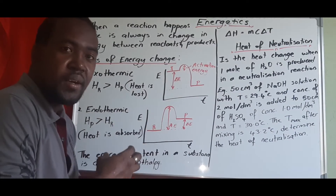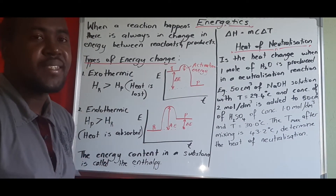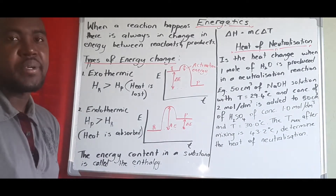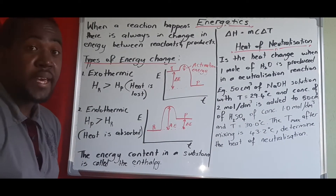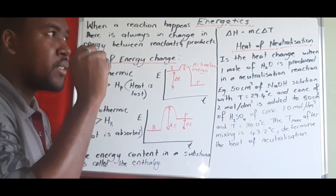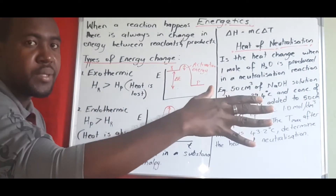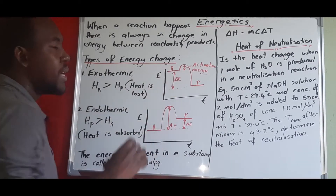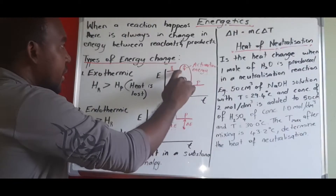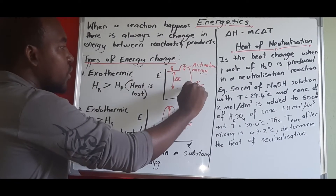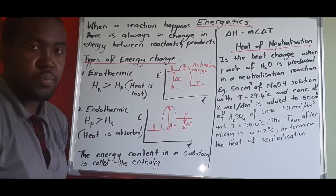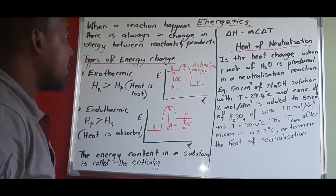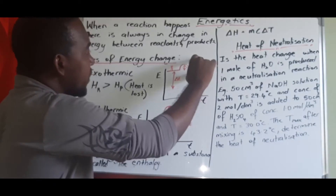Because the compounds between reactants and products are different, we have two types of energy change: the exothermic reaction and the endothermic reaction. Exo means out, thermic means heat, so heat is sent out from the reaction to the surroundings. The energy profile diagram for an exothermic reaction shows the reactants at high energy, peaking upward to start the reaction, then falling to lower energy products. This drop in energy is released to the environment as heat.